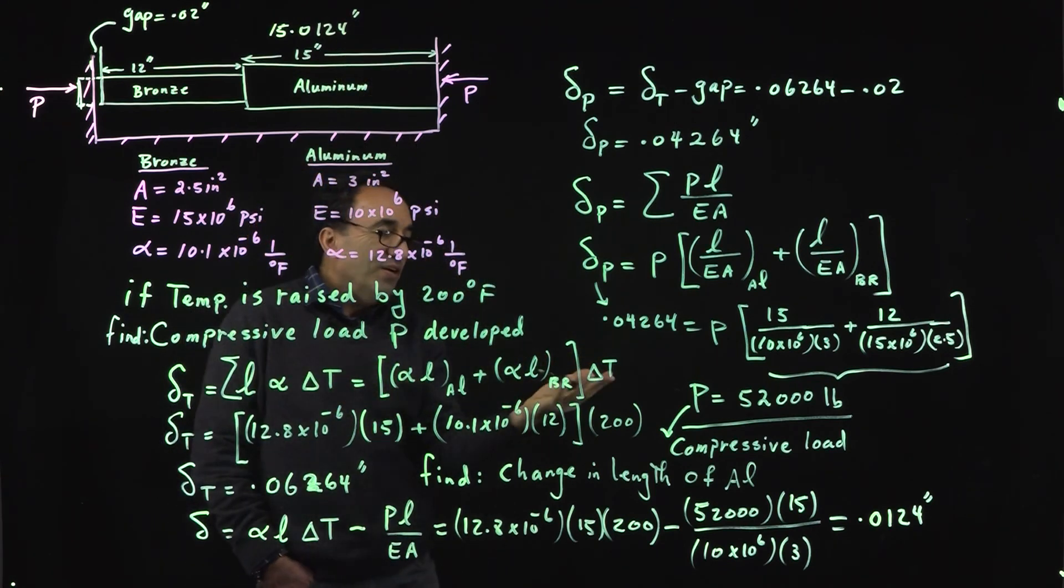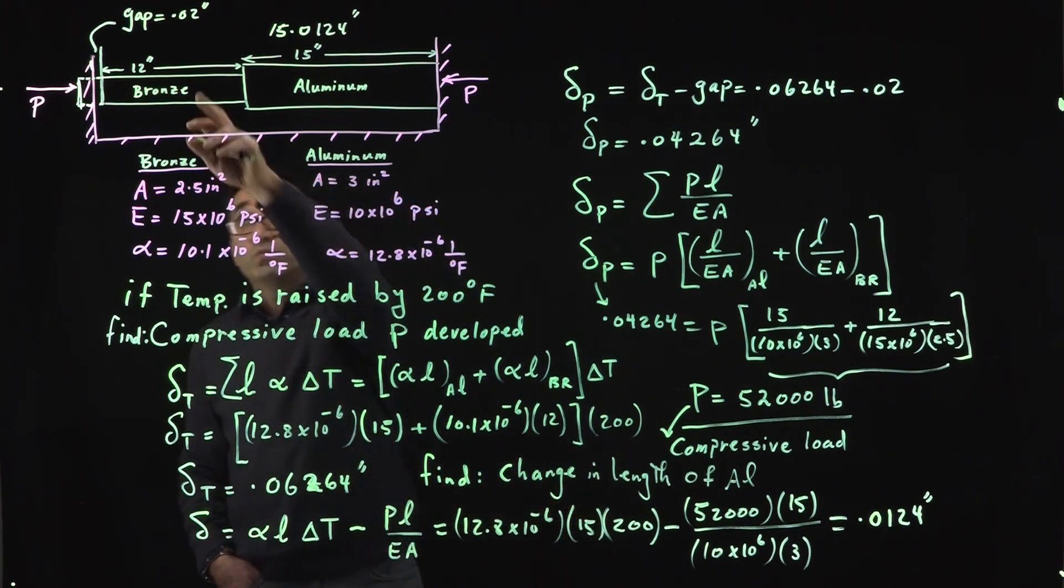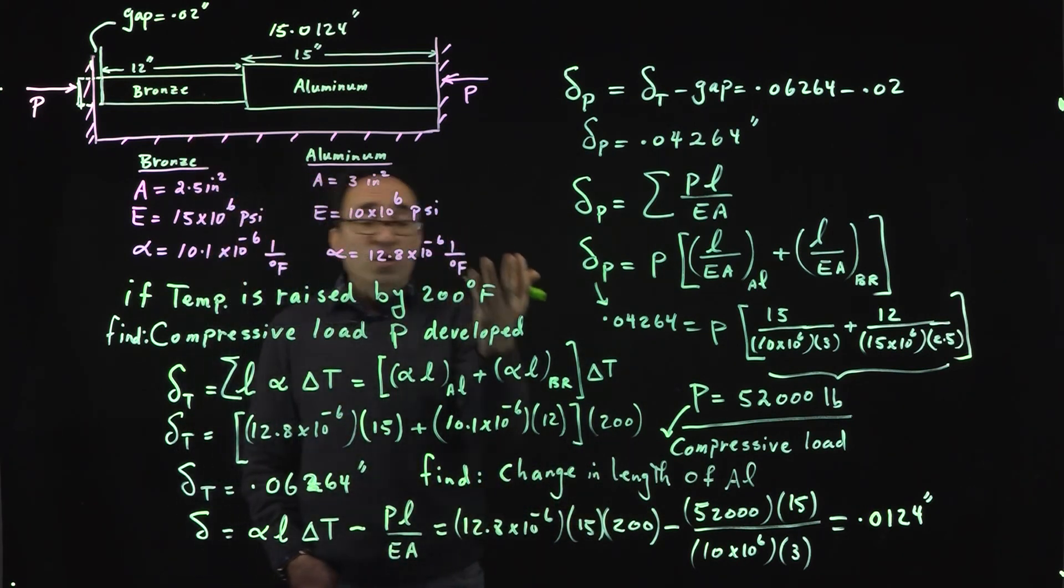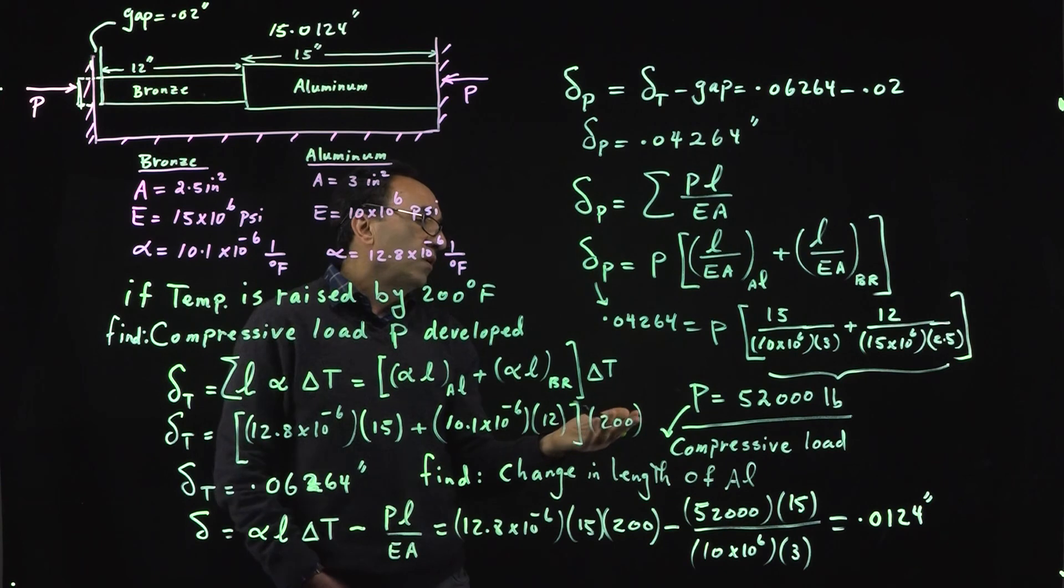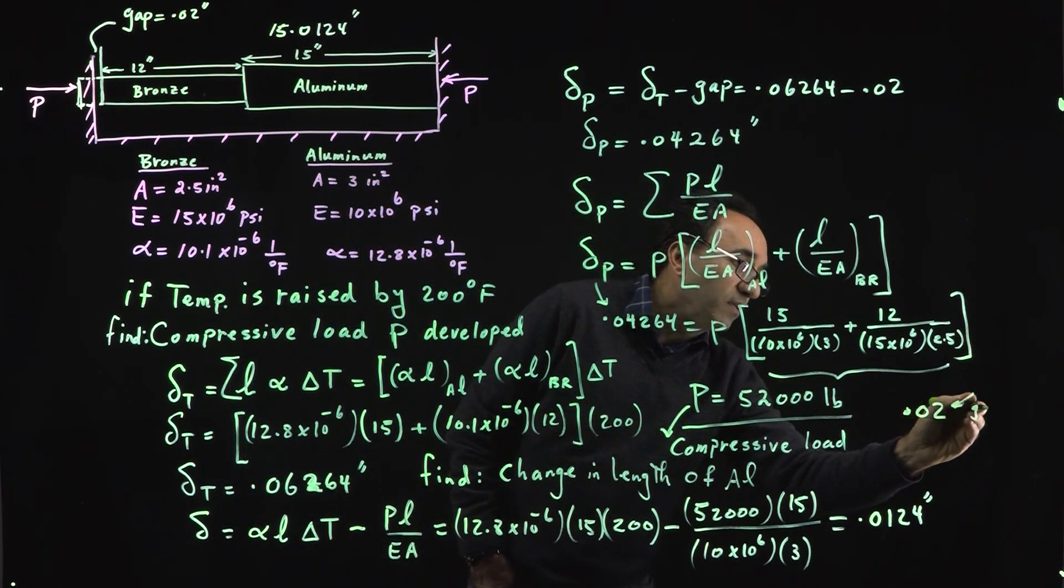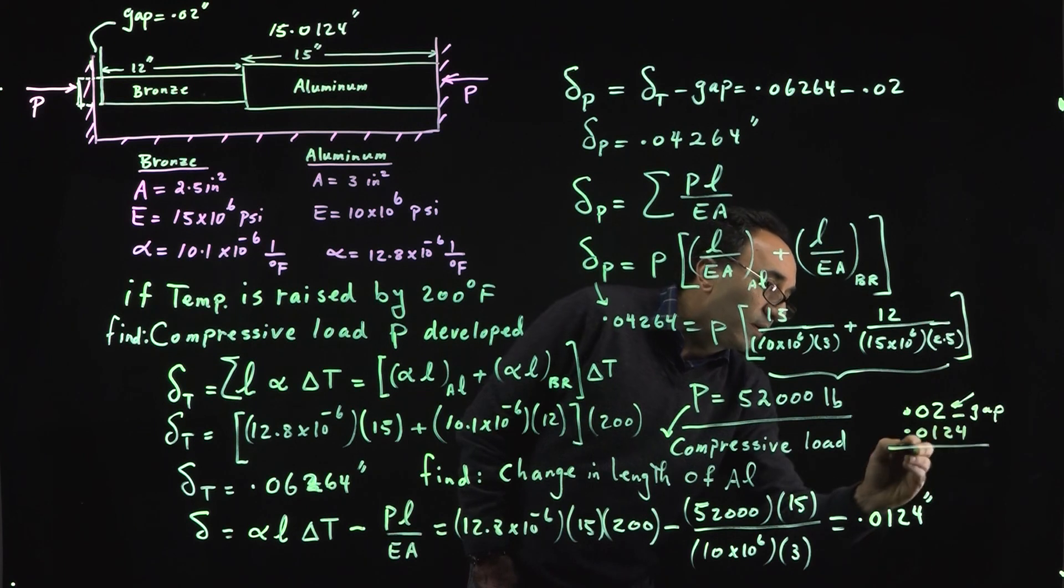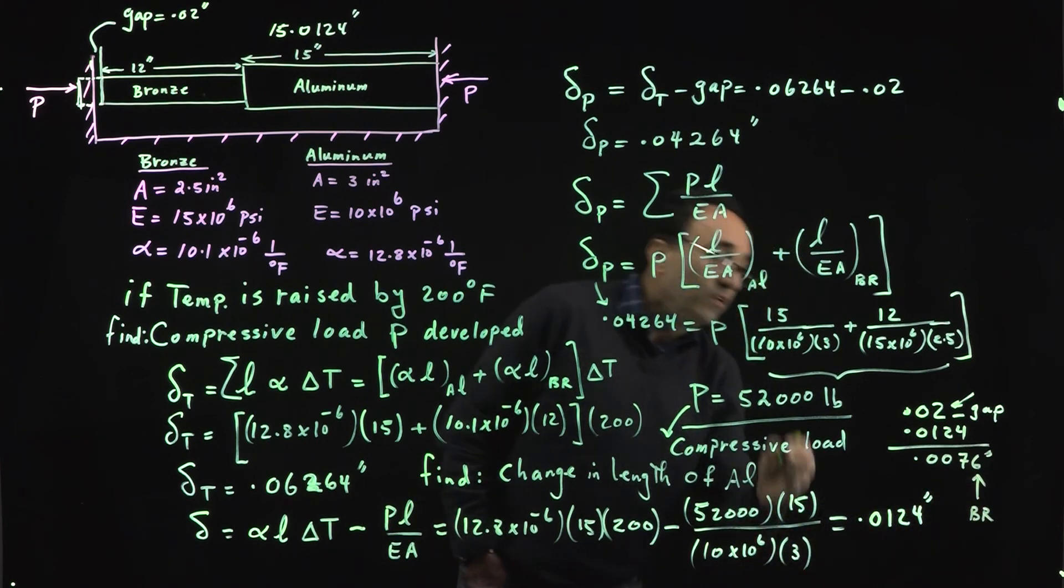By the way, without even going through the same process for the bronze, you're only confined to the 0.02 inch gap, that's your gap. Subtract this from the gap, and here we go, 0.0076 inches. That's how much the bronze is going to change in length, so the final length of the bronze is going to be 12.0076 inches.